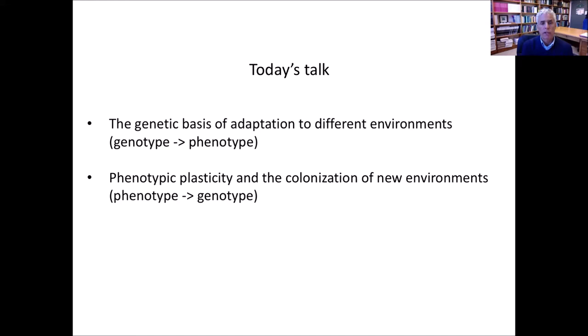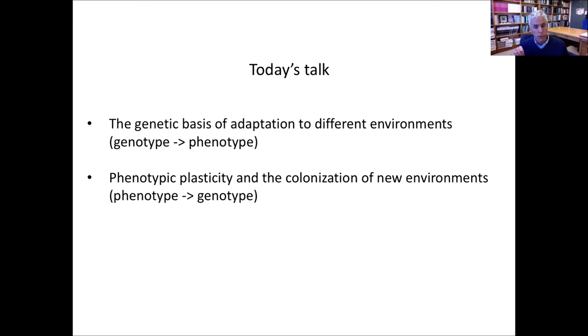What I'd like to do in today's talk is take two approaches, drawing from recent published and unpublished work. In the first half, I want to talk about the genetic basis of adaptation to different environments, starting with the genotype — sharing results from genome scans for selection and identifying genes that might be important for particular phenotypes. In the second half, I'll start with the phenotype and work down to the genotype, emphasizing the important role of the environment in modulating the phenotype of complex traits.